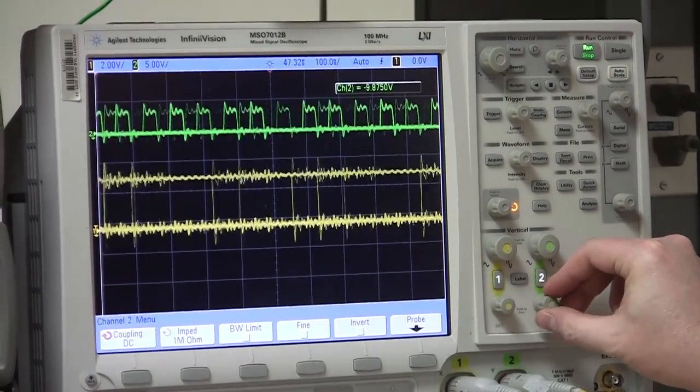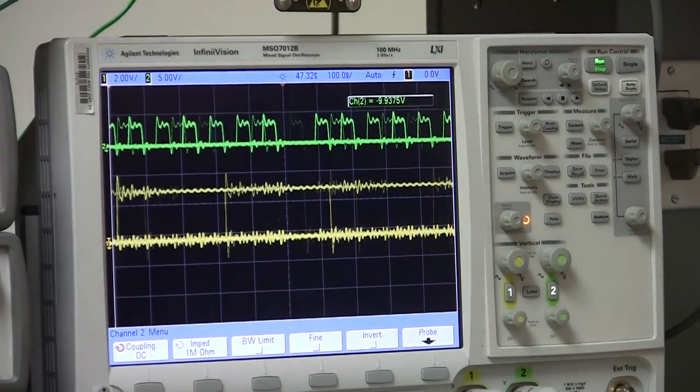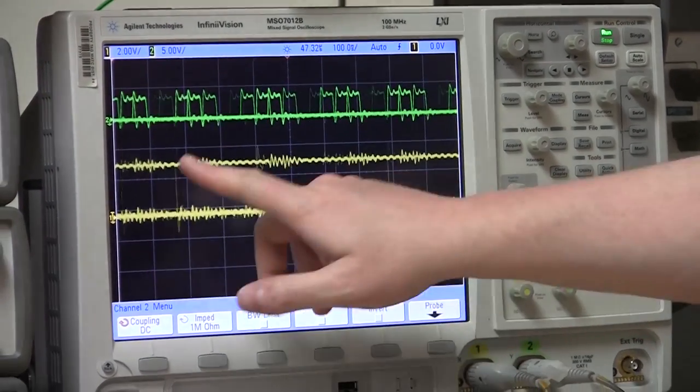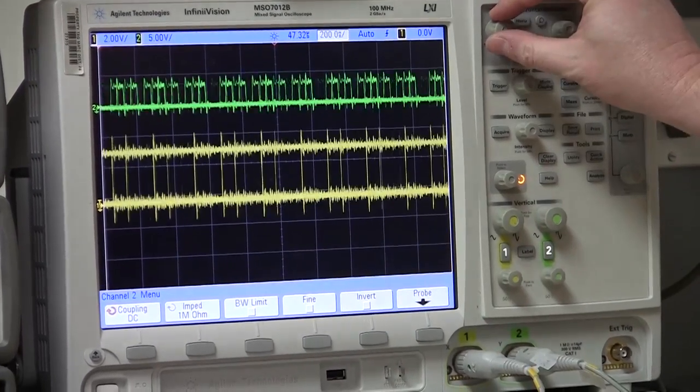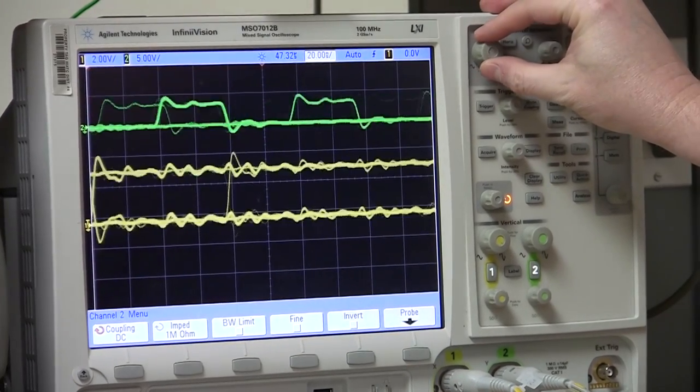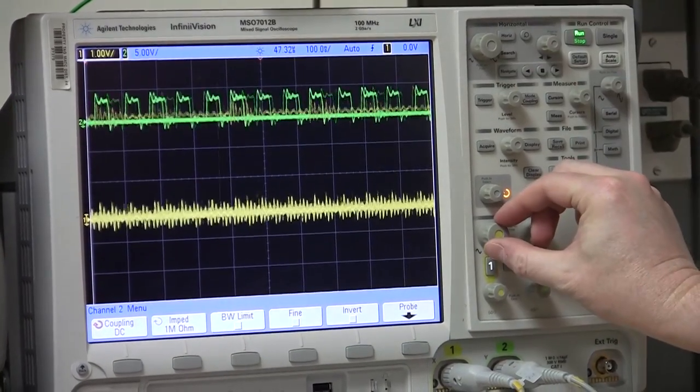Okay. So the green, this is channel two. That's going to be our dot clock. Whereas this channel here that we were using before, it's going to be our data clock. In this case, we can see what the channels are doing in relation to each other.